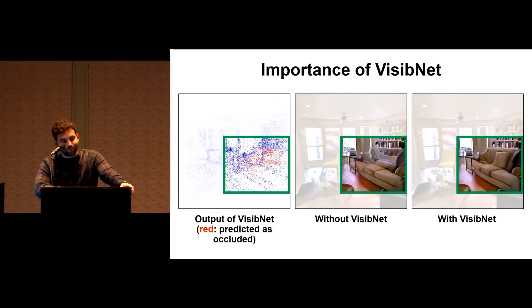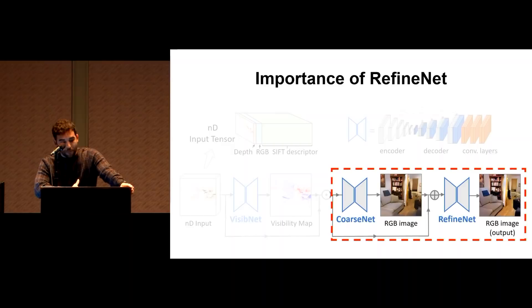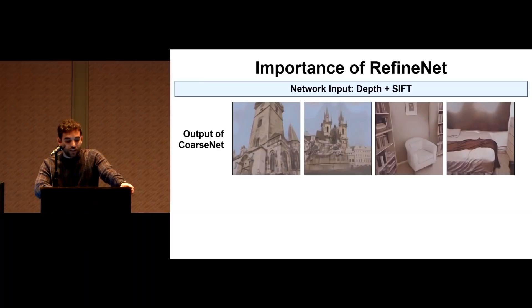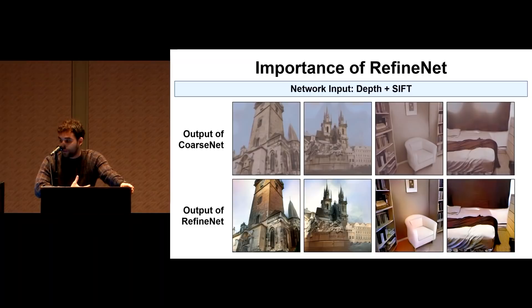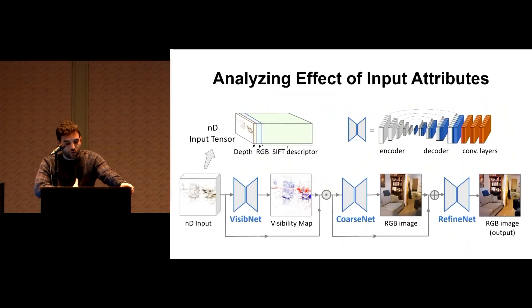So we now look at why RefineNet is important. So we do this by comparing the outputs of CoarseNet and RefineNet for four different scenes. And as you can see, RefineNet makes a big difference. RefineNet makes a big difference with respect to edges, color, and removing image artifacts. So even though the inputs are just depth and SIFT, RefineNet is able to bring back all the color information.